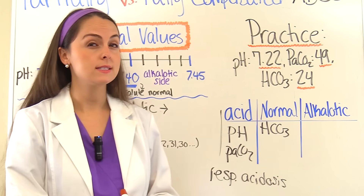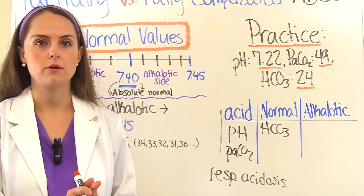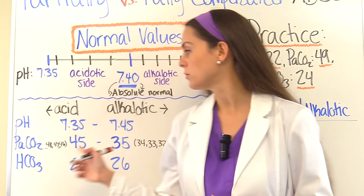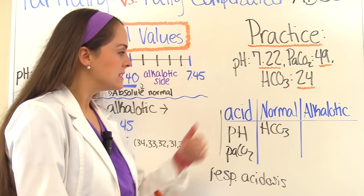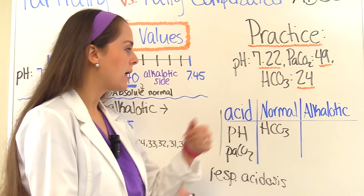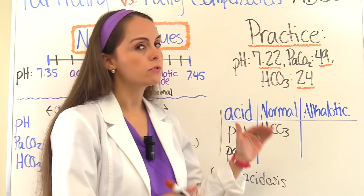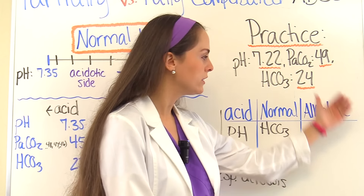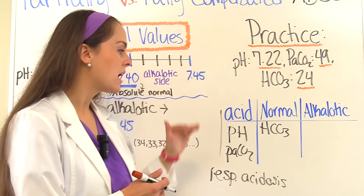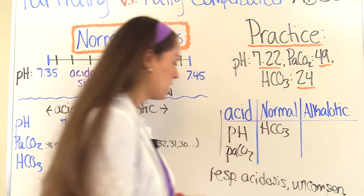Do we have compensation going on? The answer is no — this is uncompensated. How do we know? Our blood pH is still abnormal and hasn't been corrected. The bicarb isn't moving out of its normal range to combat the acidosis. If compensation were occurring, bicarb would be increasing to make things more alkalotic, but it's not doing that. So this is respiratory acidosis, uncompensated.